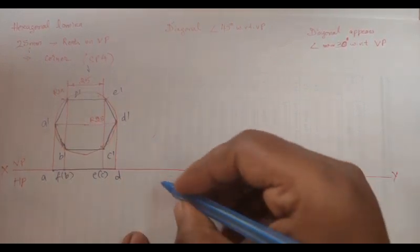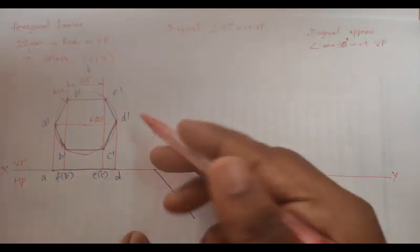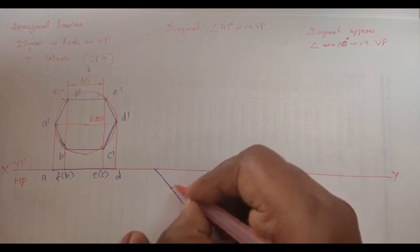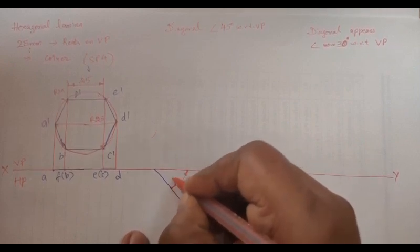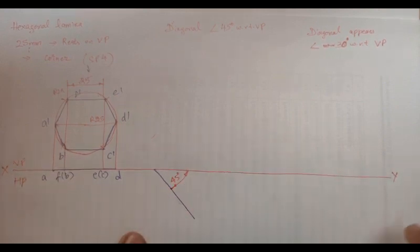You are going to draw a line using the protractor. 45 degrees. I am going to take the distance from A to F. Take the distance, cut an arc. A to C, cut an arc. A to D, cut an arc.